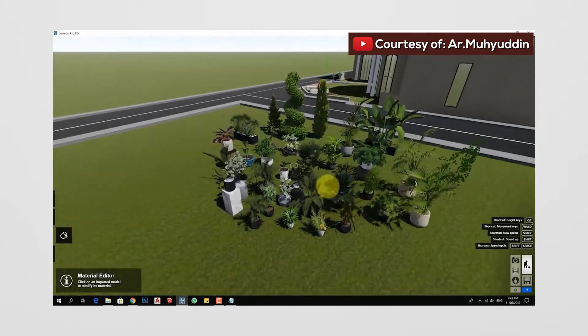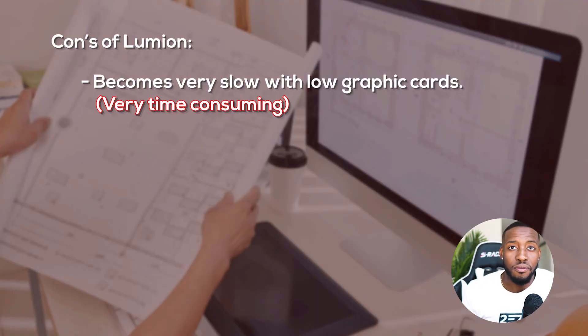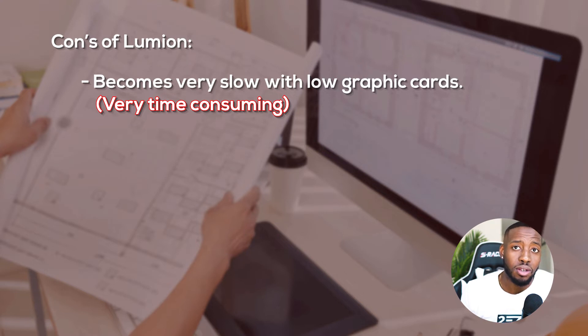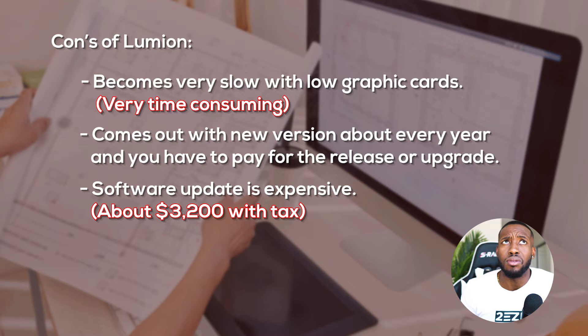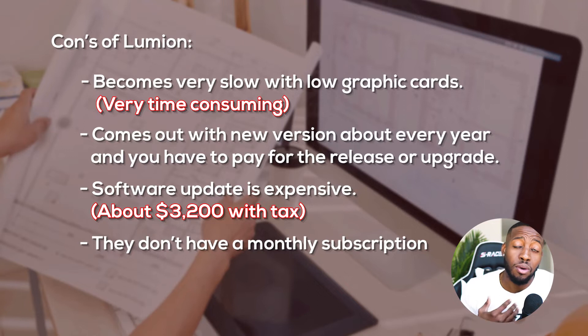You can also import your own textures and it makes it look super realistic depending on the quality. Some cons though: it can get really slow if you're using a smaller graphics card, which makes it very time consuming. They also come out with a new version every single year and you have to pay to upgrade, and it's pretty pricey — about $3,200 with tax to buy the software. That's a lot of money if you're not a firm making a lot of money already. They do have a free version for students, though it's kind of limited. They also don't have a monthly subscription, which would have been more accessible.